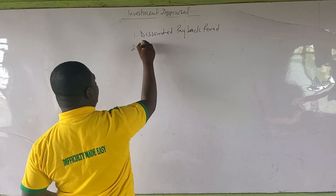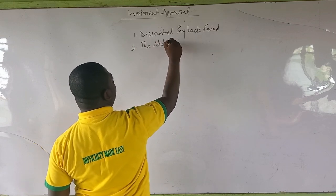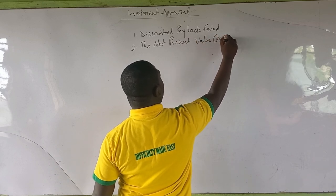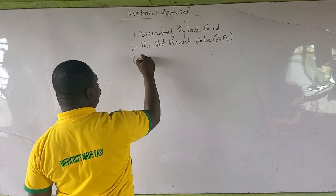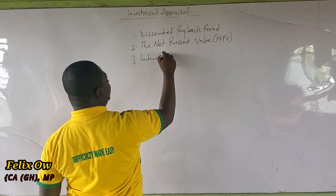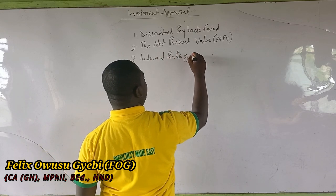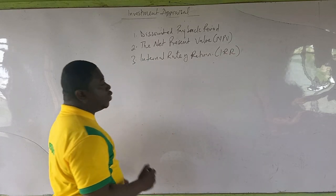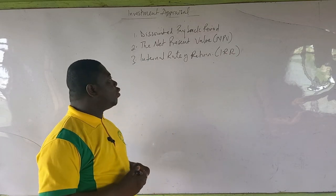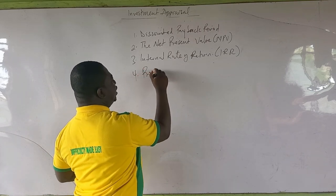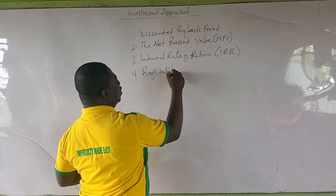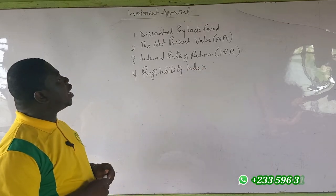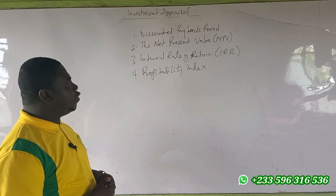We are also going to look at the net present value method, which we call the NPV, and then the internal rate of return, which we call the IRR. We are also going to talk about the profitability index. So these are the methods under the discounted cash flow category.